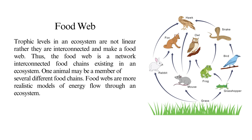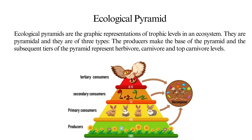Food web: trophic levels in an ecosystem are not linear; rather they are interconnected and make a food web. The food web is a network of interconnected food chains existing in an ecosystem. One animal may be a member of several different food chains. Food webs are more realistic models of energy flow through an ecosystem.